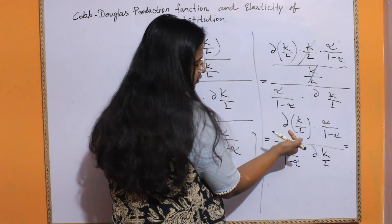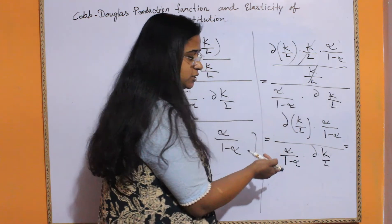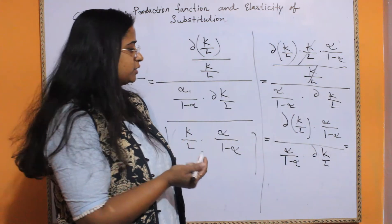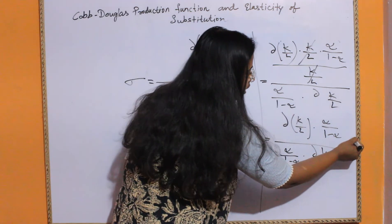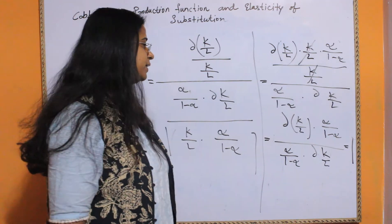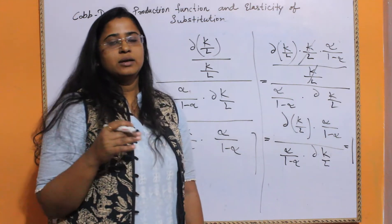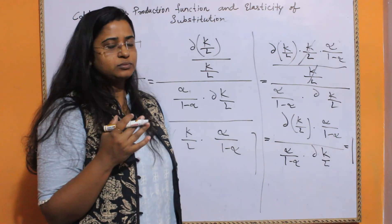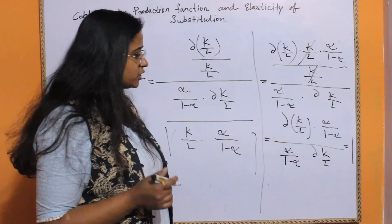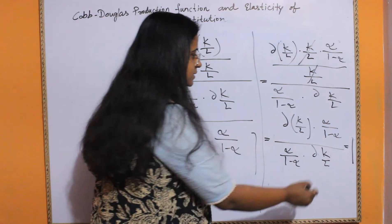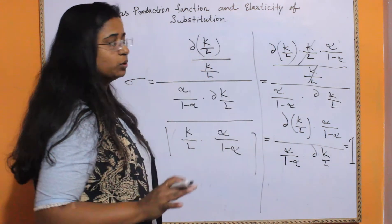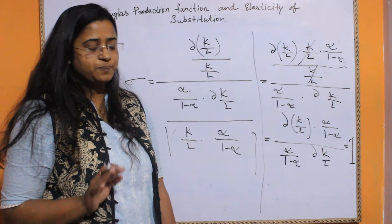We are left with the same expressions in the numerator and denominator, so we get 1. The elasticity of factor substitution in Cobb-Douglas production function is equal to 1.